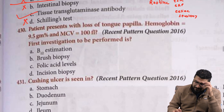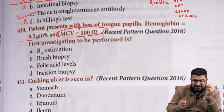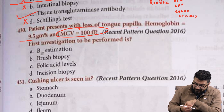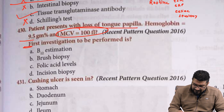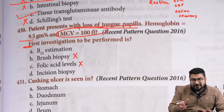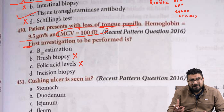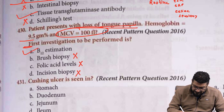Moving to next: patient presents with loss of tongue papillae, MCV 100, hemoglobin 9.5. MCV 100 means macrocytic — macrocytic anemia. They are asking the first test; first test will be serum B12 level. Brush biopsy is not needed; folic acid levels are not needed. Because you can see loss of tongue papillae — that is the hint. Loss of tongue papillae is seen in B12 deficiency. So the answer is B12 estimation.